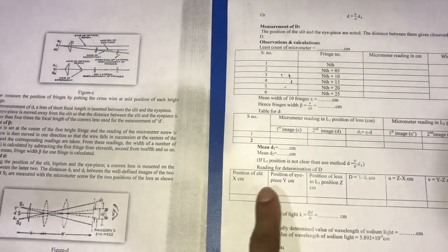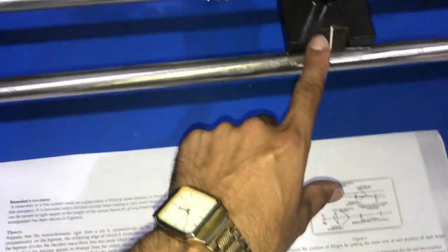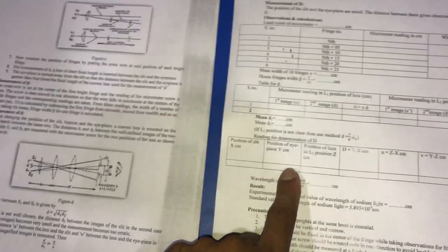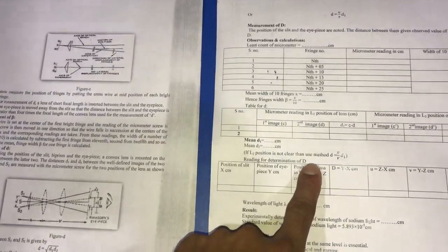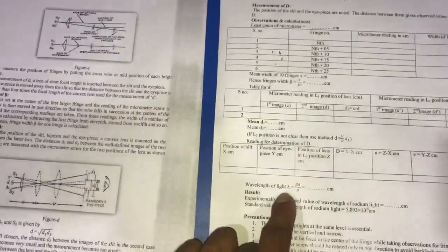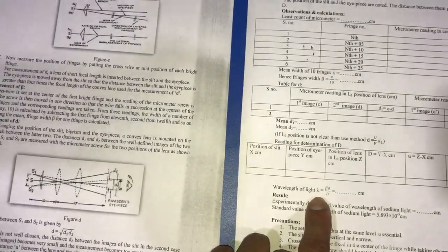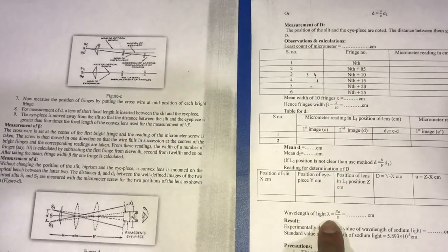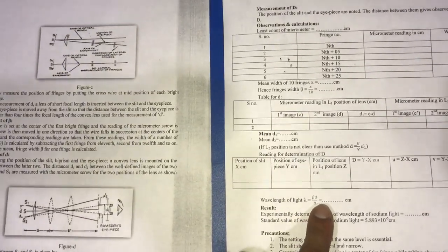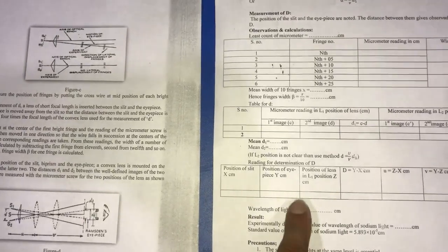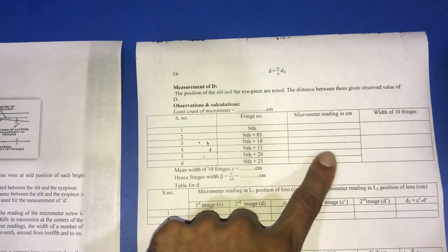By using the scale, and then based on all these observations we can calculate the wavelength of monochromatic light, which is sodium light, as beta times d divided by capital D. Here beta is the fringe width which we calculate from this table.